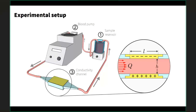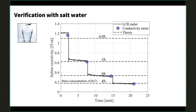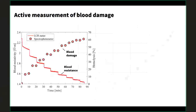We first verified the system using salt water, which has a well-known conductivity-versus-concentration relationship, to confirm we could measure the conductivity of a fluid flowing through our channel. We plotted resistivity — the inverse of conductivity — versus time, and at set intervals added increasing salt concentrations. We saw resistivity drop with each addition as the solution became more conductive. The results matched both a conventional conductivity meter and the theoretical approximation for saline conductivity, confirming the system worked well.